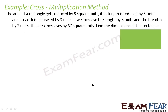Let us take one more example. We are told that the area of a rectangle is reduced by 9 square units if its length is reduced by 5 units and the breadth is increased by 3 units. Also, if we increase the length by 3 units and the breadth by 2 units, the area increases by 67 square units. There are two cases here. Let the original length be l and the original breadth be b.